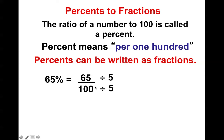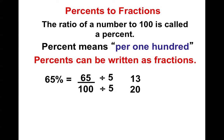Therefore, if I have 65%, that gets me 65 over 100. And of course, every fraction can always be simplified, so it would become 13 over 20.